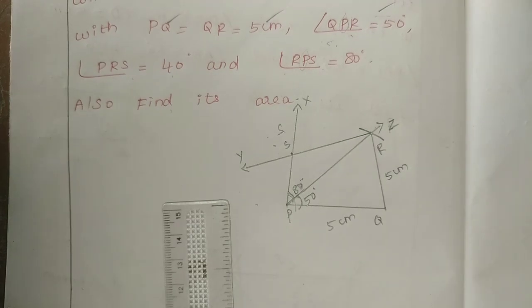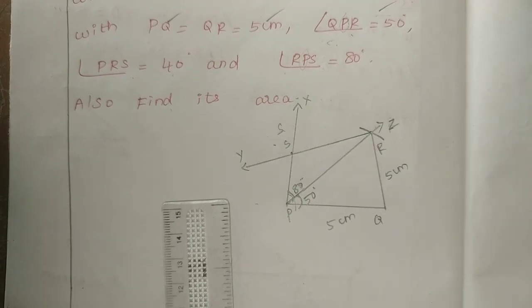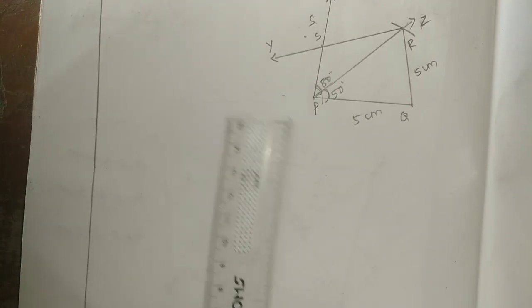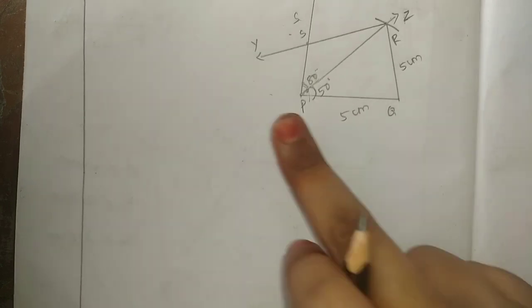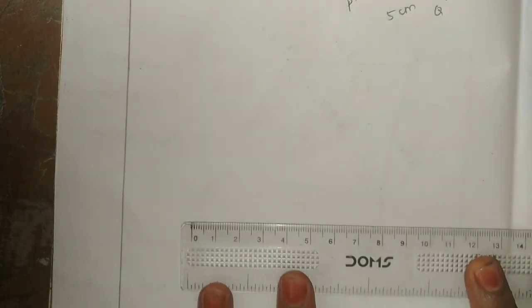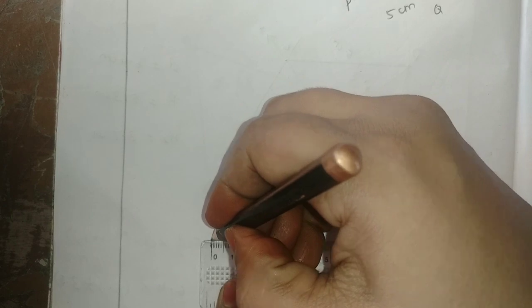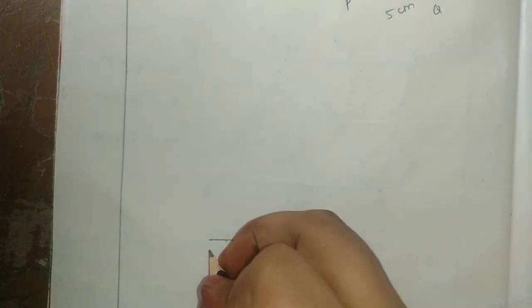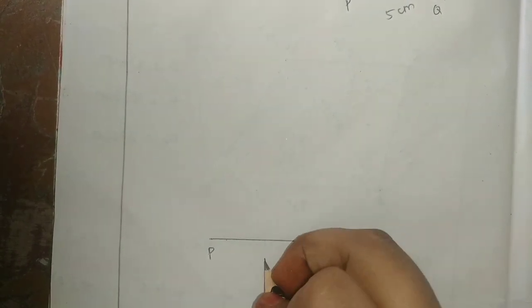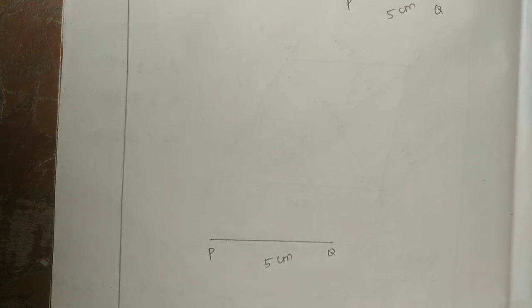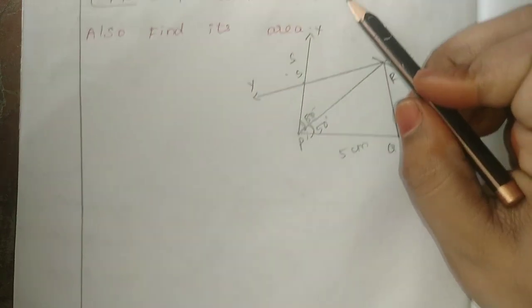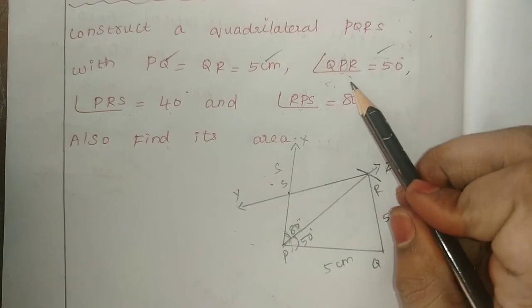First step: draw the base PQ equal to 5 centimeters. So PQ is 5 cm. We need to be careful about the degree angles. We have QPR at 50 degrees, and then 40 and 80 degrees for the other angles.